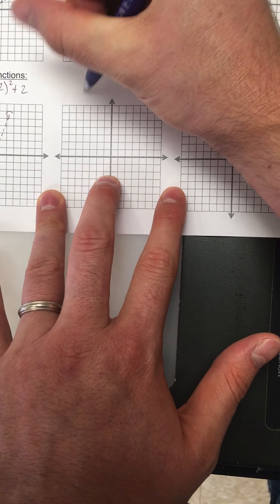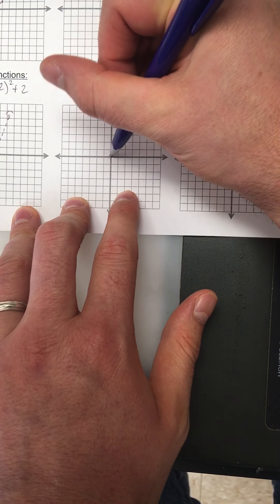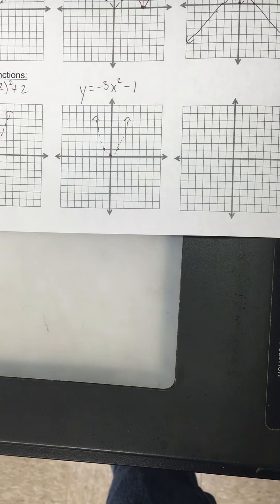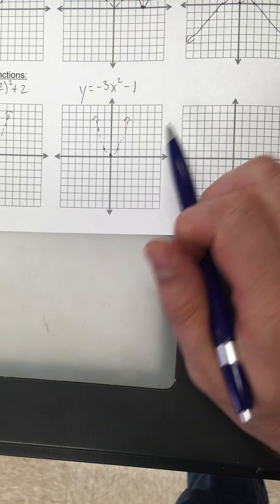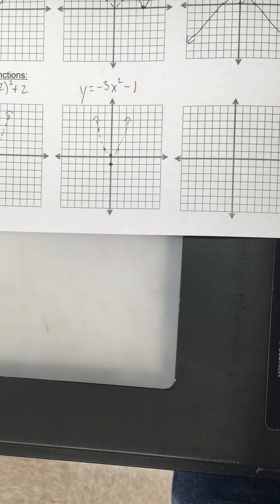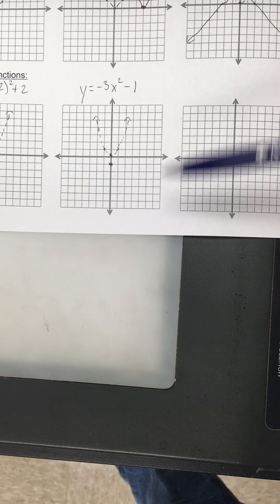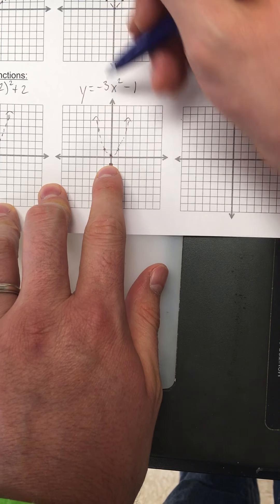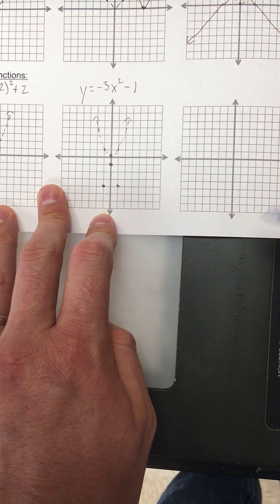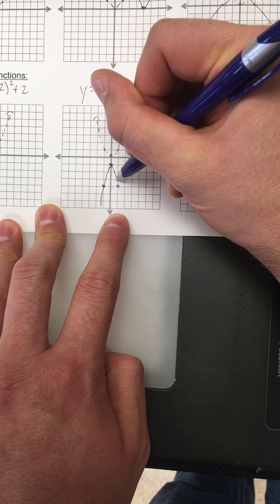Two more quick problems. If I have y equals negative three x squared minus one — x squared tells me it's going to be a parabola. Start with the parent function at (0,0), going up one over one. Now, minus one at the end moves the vertex down one. The negative three in front: the negative means x-axis reflection — it opens downward. The three is a whole number and creates a vertical stretch, making it thinner. So from the vertex, instead of going up one over one, I go down three over one to the right one, and down three to the left one. Don't keep going — it curves. That's my graph.